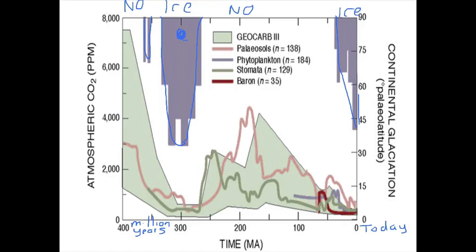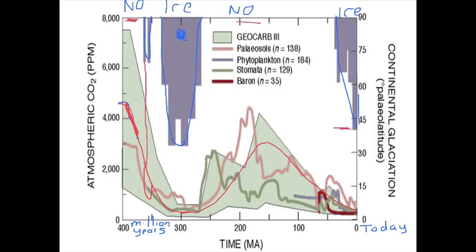Shown below is the history of CO2. What you'll notice is when there was no ice, CO2 was high — and this is estimated in various ways. There's high CO2 back here in a no-ice time. When CO2 got low, the ice had grown. When CO2 went back up to being high, the ice had melted away. When CO2 got low again, the ice had grown back. There's actually a little dip in CO2 right here that goes with that little blip of ice.